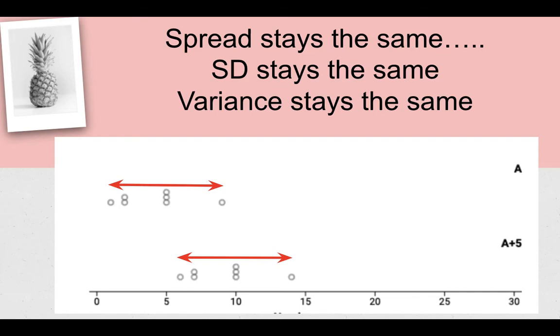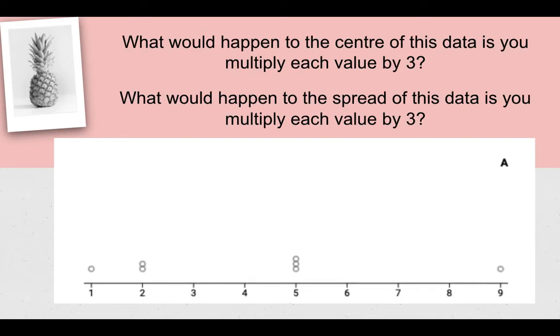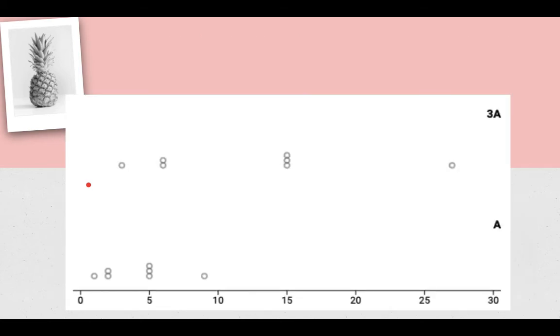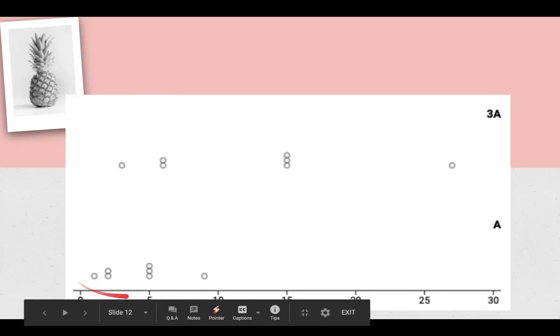So adding something on increases the mean but doesn't increase the variance or the standard deviation. What if instead of adding the same thing each time, we multiplied by 3? What's going to happen to the center? What's going to happen to the spread? Let's have a look at the picture. This time I've got A at the bottom and 3A at the top.